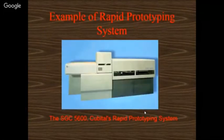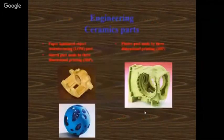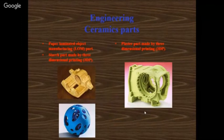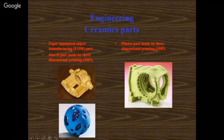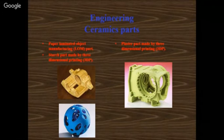An example is the SGC (Solid Ground Curing) 5600 RPT machine — a powder-based machine. Components can be developed by both CNC and RPT. One example is the paper laminated object manufacturing method. A starch part made by the 3D printing process includes a blue color ball within a ball — a very complicated product we cannot develop by conventional or non-conventional machining. The only alternative method is the RPT process. A plaster part is also made by the 3DP process.